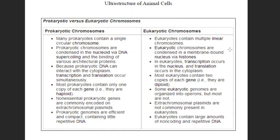Eukaryotic chromosomes are condensed in a membrane-bound nucleus via histones. Because prokaryotic DNA can interact directly with the cytoplasm, transcription and translation occur simultaneously — this is called co-transcriptional translation, since there is no separate compartment. In eukaryotic cells, transcription takes place within the nucleus, so mRNA must be processed and exported outside the nucleus for translation; therefore, coupled transcriptional translation is not seen in eukaryotic cells.